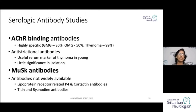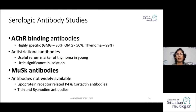For serological studies, the most important is acetylcholine receptor binding antibodies — highly specific, present in 80% of generalized Myasthenia Gravis and 50% of ocular Myasthenia. If acetylcholine receptor antibodies are found without MG symptoms, look for thymoma — they could be present in 99% of patients with thymomas. Anti-striational antibodies are another marker of thymoma but of little significance in isolation.